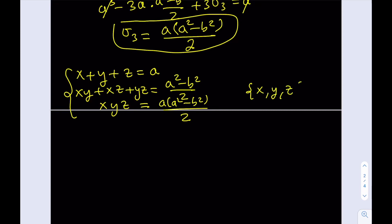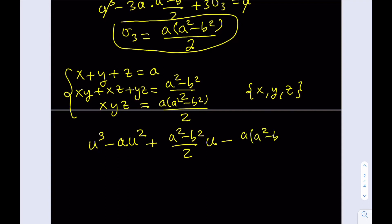We're going to write down the cubic equation whose roots are x, y, z, using u as the variable. Taking advantage of Vieta's formulas — the sum of roots is negative b over a — we write: u cubed minus A·u squared plus (A squared minus B squared)/2 · u minus A(A squared minus B squared)/2 equals 0. The signs alternate, with the product term taking a negative sign.